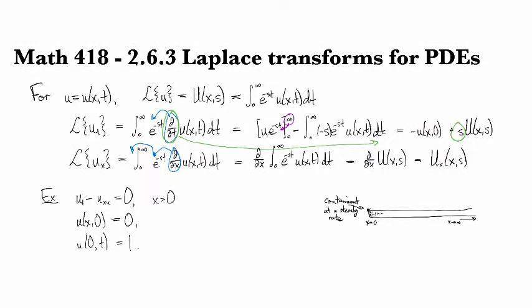Okay, so applying Laplace transforms to this problem. We have the PDE becomes s U(x,s) minus u(x,0). So this part is our Laplace transform of u_t. And then we have minus U_xx(x,s).